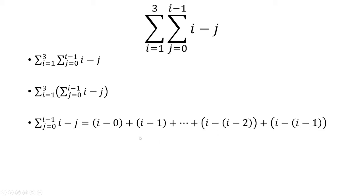We can simplify this further because i minus 0 is just i. We have i minus 1. And then i minus the quantity i minus 2 is just 2. And then i minus quantity i minus 1 is 1.